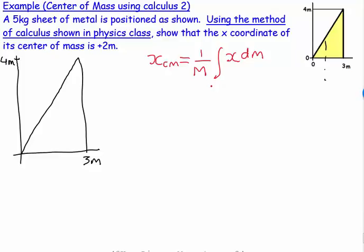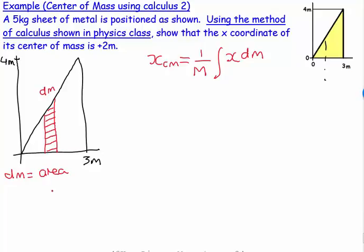The problem is I don't know how to integrate x with respect to dm, so I need to sort that out. Thinking about the physics of the situation, dm is a little bit of mass in a slice. We can express dm using the area density multiplied by the little bit of area in that slice.